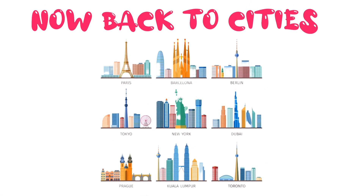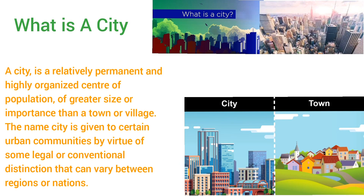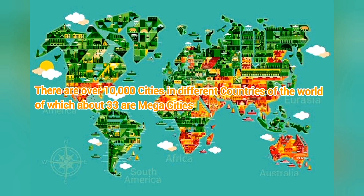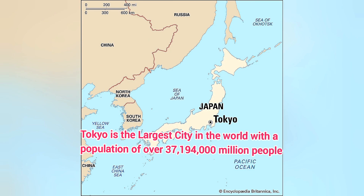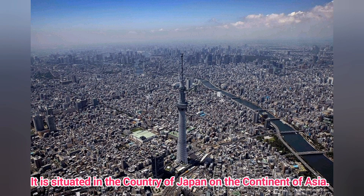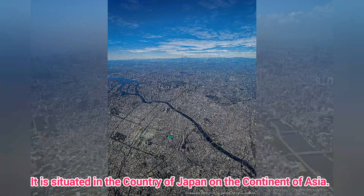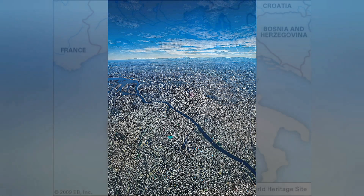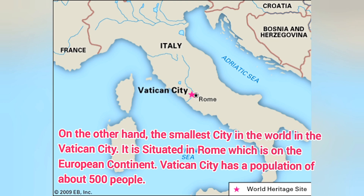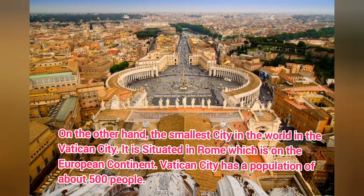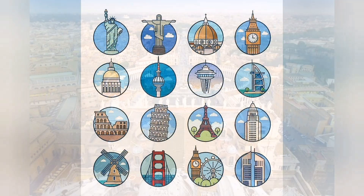Now back to cities. Of the 193 countries of the world, there are so many cities. A city is a relatively permanent and highly organized center of population of greater size or importance than a town or a village. There are over 10,000 cities in different countries of the world, of which about 33 are mega cities. Tokyo is the largest city in the world with a population of over 37 million people. It is situated in the country of Japan, and Japan is on the continent of Asia. On the other hand, the smallest city in the world is the Vatican City, situated in Rome on the European continent, with a population of about 500 people.